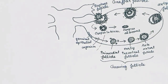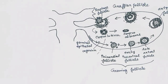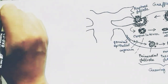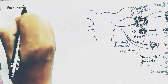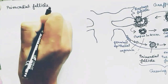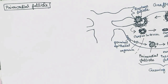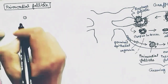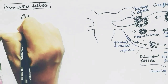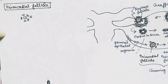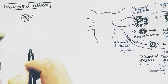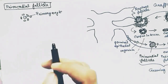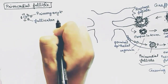Now let us look into the follicles in detail. First, the primordial follicle. In the primordial follicle, the primary oocyte is at the center and the follicular cells surround the oocyte with a single layer.